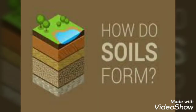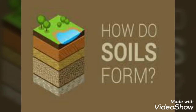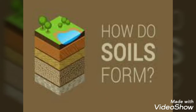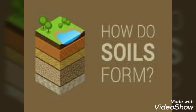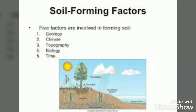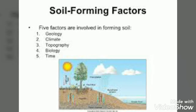The outer layer of the earth on which plants grow is called soil. Soil is very important for the sustenance of life on earth. Let us see how soil is formed.